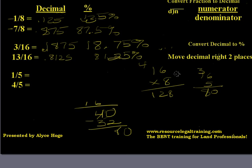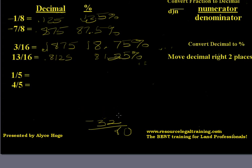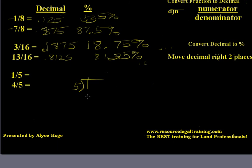So now let's look at an easy one — one-fifth. If the oil and gas lease has a royalty fraction of 1/5, this is how one-fifth converts to a decimal. I am going to take the numerator, which is 1, and divide it by the denominator, which is 5. Can 5 go into 1? No. So we are going to put our decimal in there and add a 0. 5 goes into 10 two times. So one-fifth is 0.20. And that percent — move the decimal place over two spaces — and that's 20%.